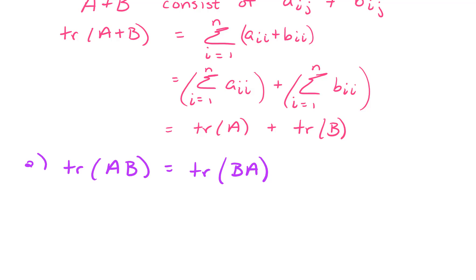We have a scalar multiplication property. The trace of C times A is equal to C times the trace of A, where C is the real number, C is the scalar.